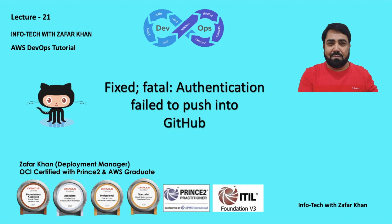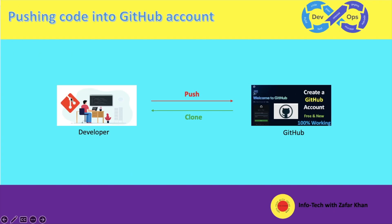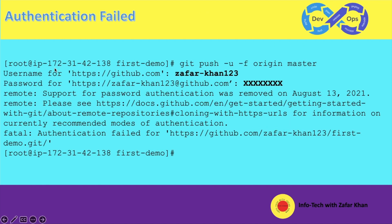In this development environment, when the developer tries to push code into the GitHub account, it will give a fatal error — authentication failed. When he provides the user ID and password, it will say: 'Support for password authentication was removed on August 13, 2021.' So authentication has failed.